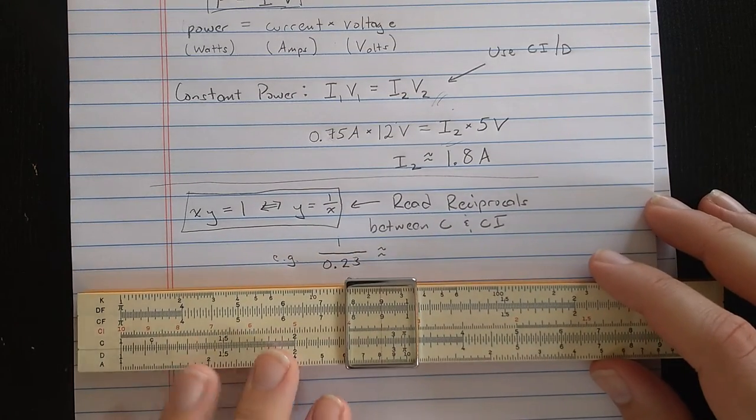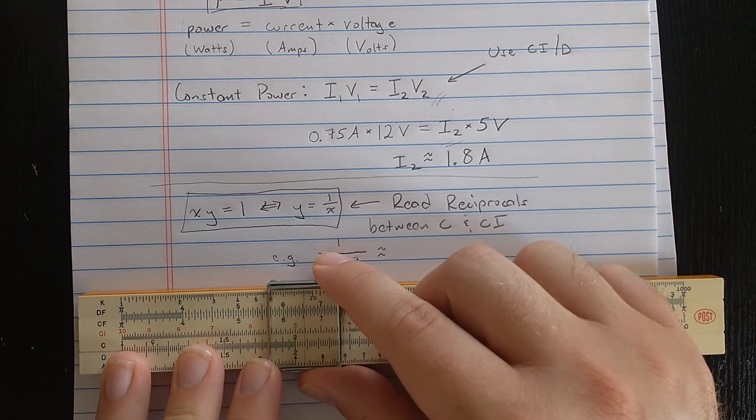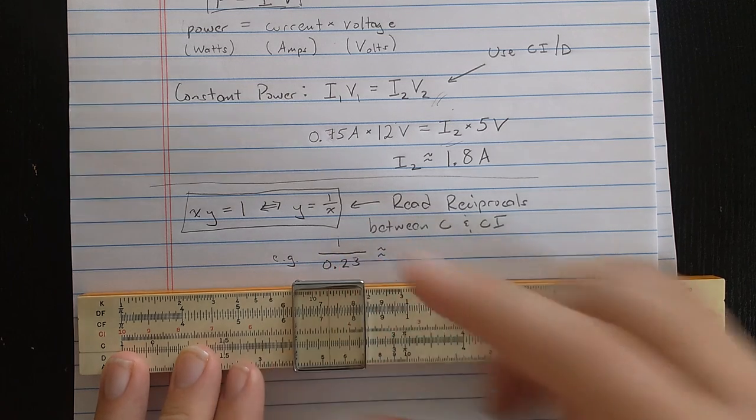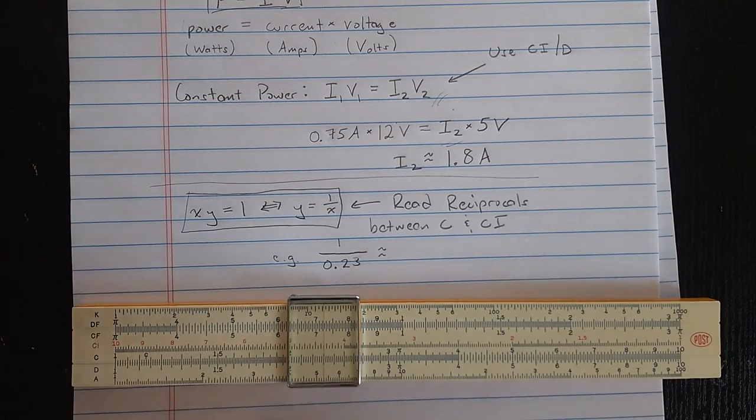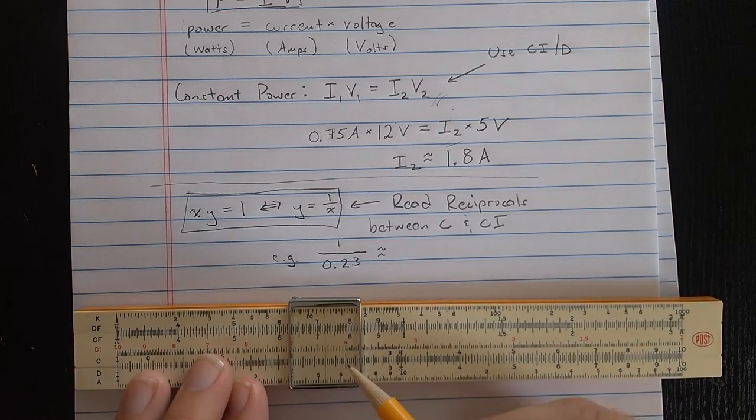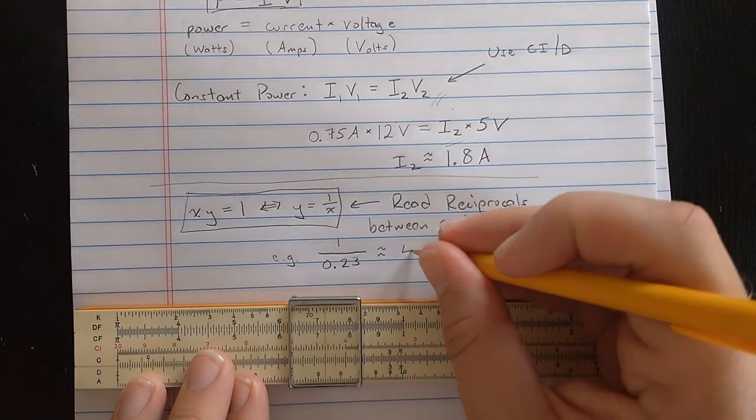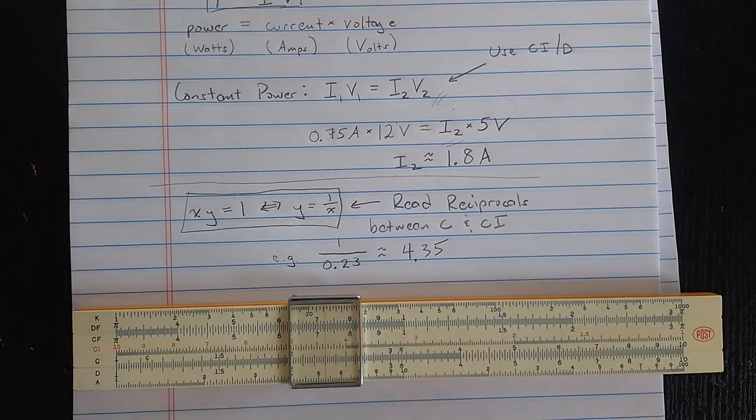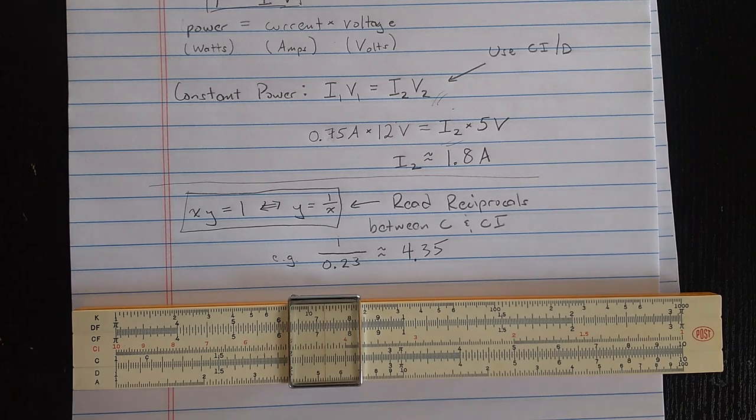So, let's do a quick example. If I find 2.3, here's 2, 1, 2, 3, 2.3, on either C or D when the slide rule is closed. Then their reciprocal should be on the CI scale. Remember, it's reading backwards, so that's 4, 4.1, 4.2, 4.3, about 4.35 as the reciprocal of 0.23. Have fun.